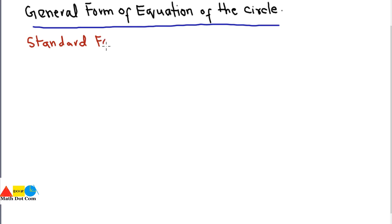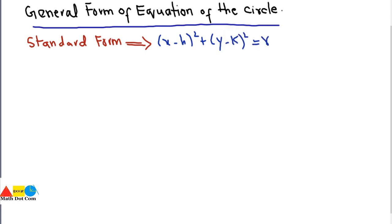There is no need to get confused between the two. Let's see how they differ from each other. The standard form of equation of a circle is (x−h)² + (y−k)² = r², or x² + y² = r². Both of these are the standard form of equation of the circle, and from these equations you can easily identify the center and radius.